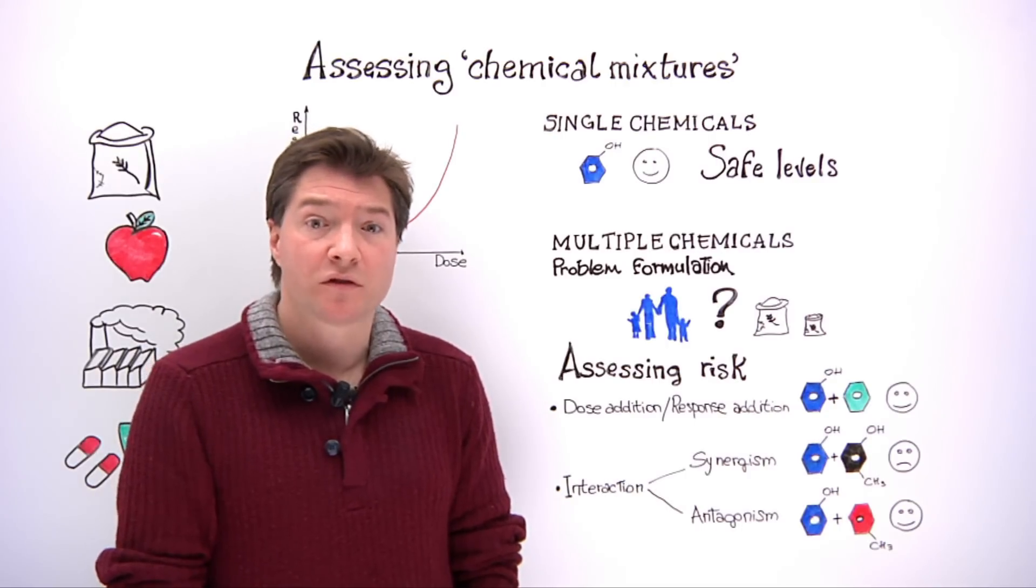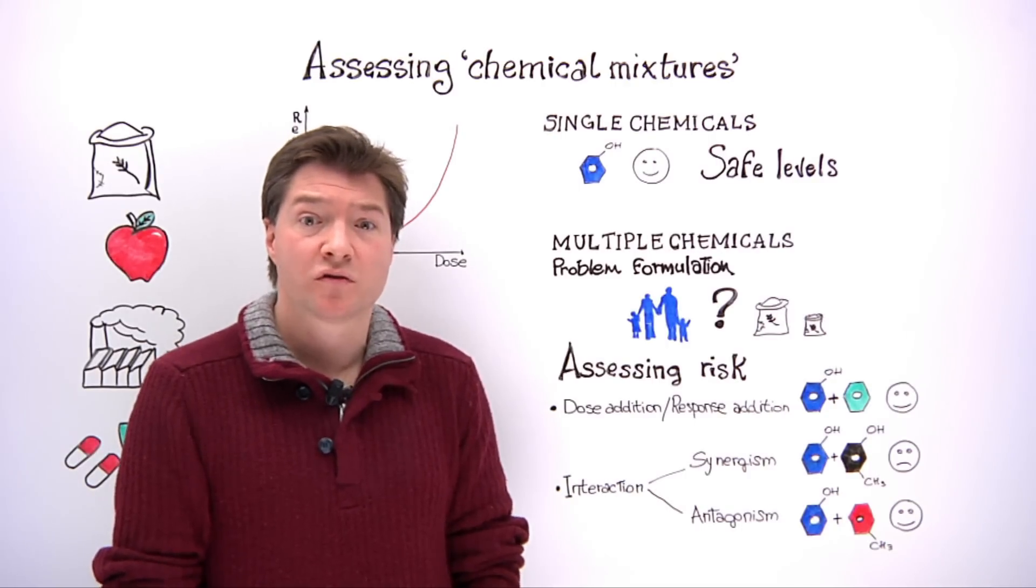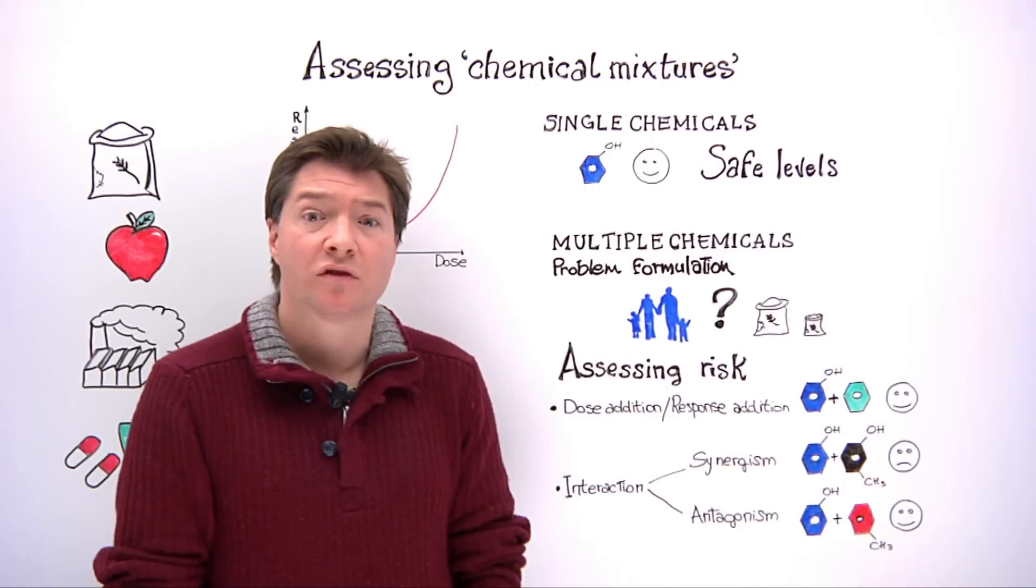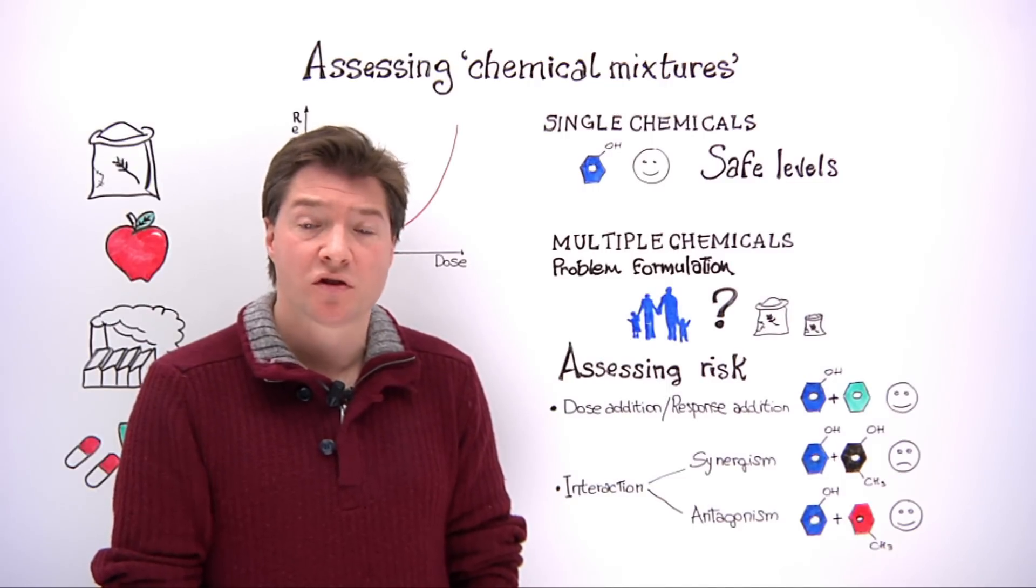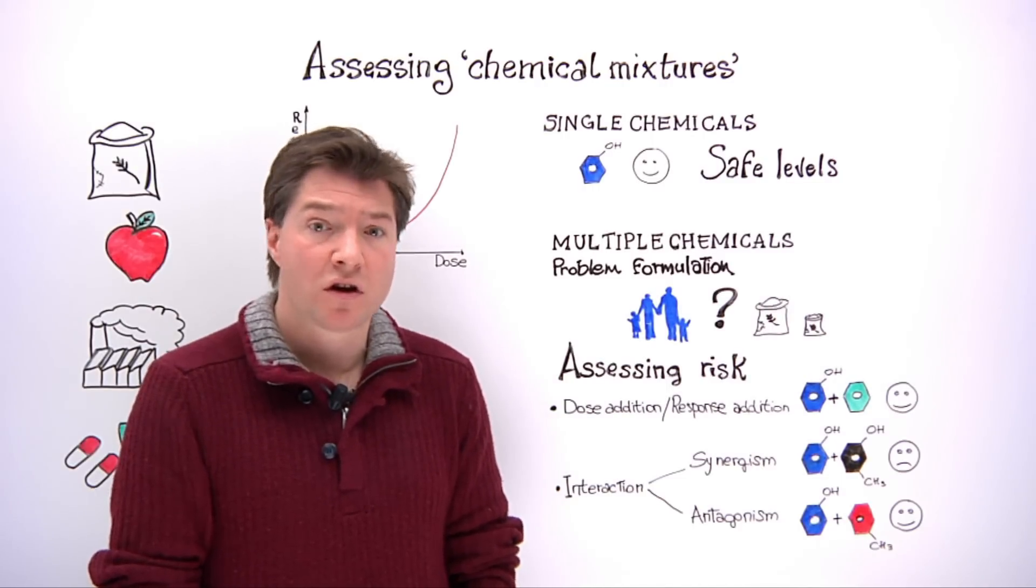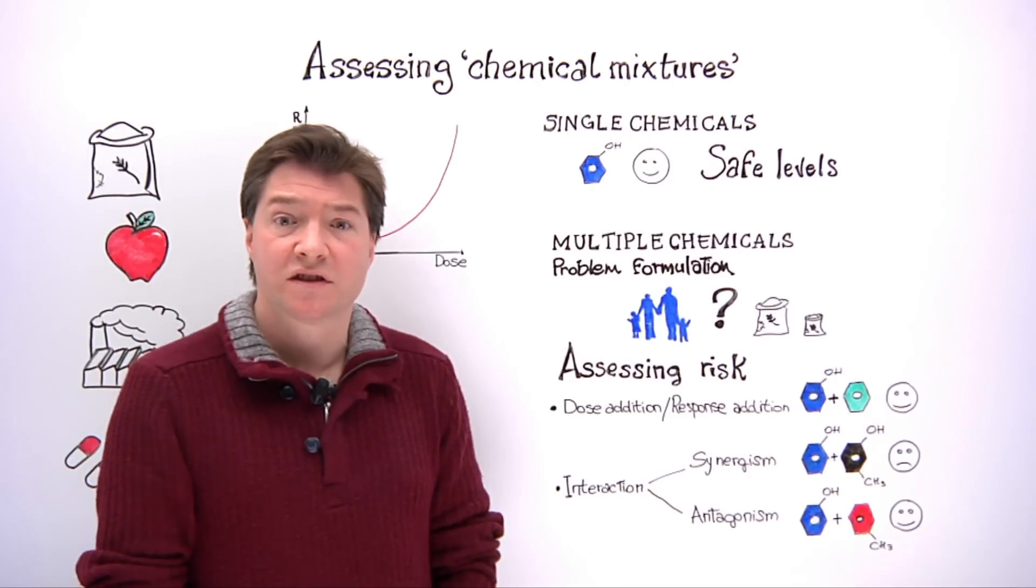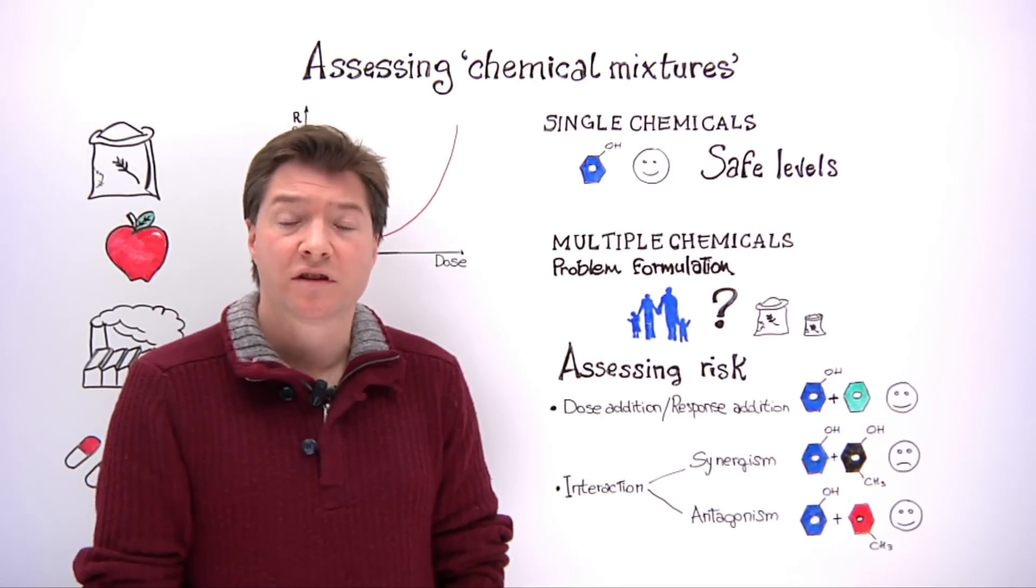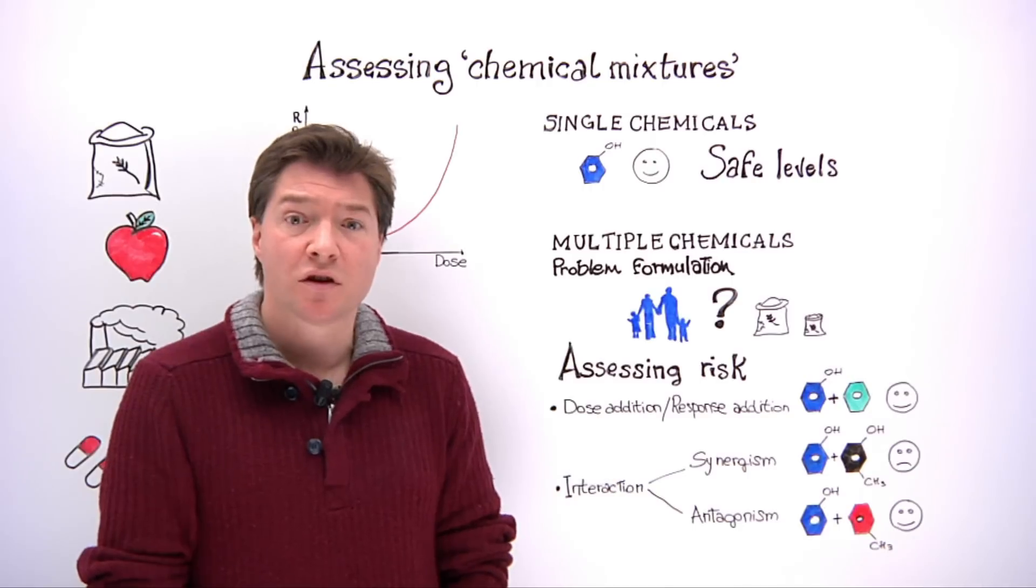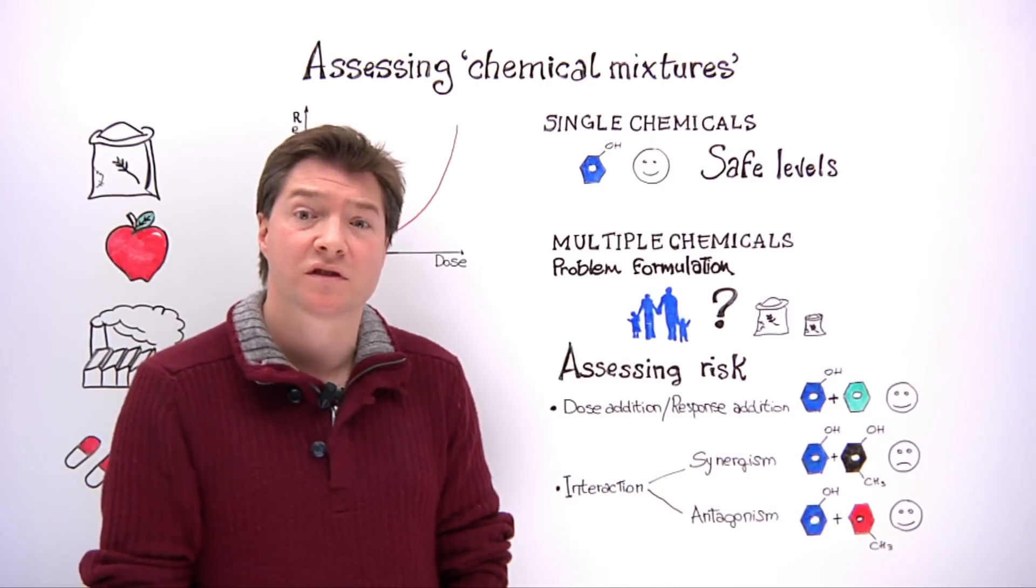Three assumptions about the toxicity are used to then conclude on the health risks: dose addition, response addition, and interaction. Dose addition means that the chemicals have a similar toxicity or mode of action and after determining their individual potency, the doses are added for the risk assessment.